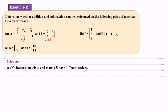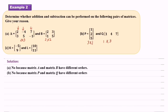Now we look at B. Matrix P has order 3 by 1 — 3 rows, 1 column. Matrix Q has order 1 by 3. So can we add or subtract these two matrices? Of course no, because matrix P and matrix Q also have different orders.